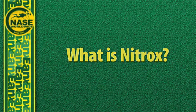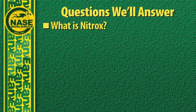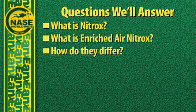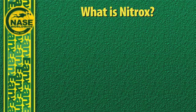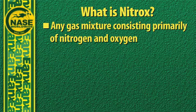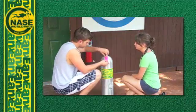We're going to start by answering the most fundamental question of all: what is nitrox? We're also going to answer the question, what is enriched air nitrox, and how does it differ from the air that you're breathing right now? Technically speaking, nitrox is any gas mixture consisting primarily of nitrogen and oxygen — so by that definition, the normal atmospheric air you're breathing right now is a form of nitrox.